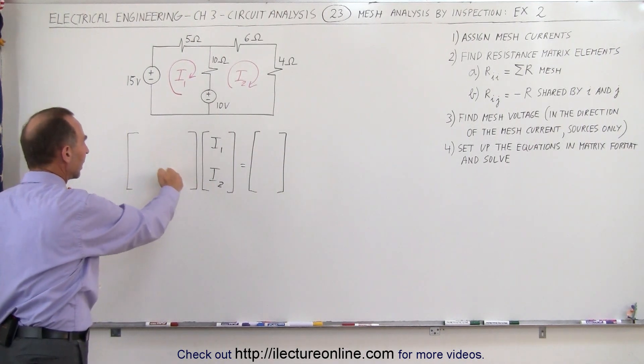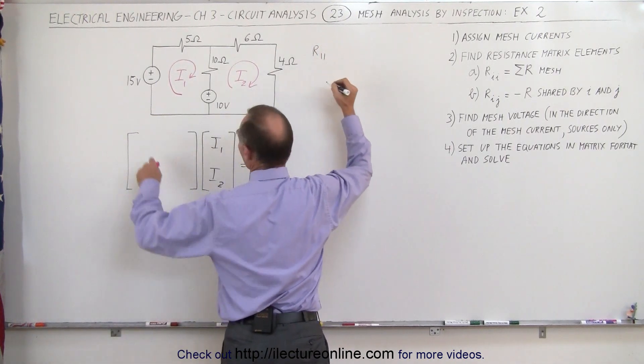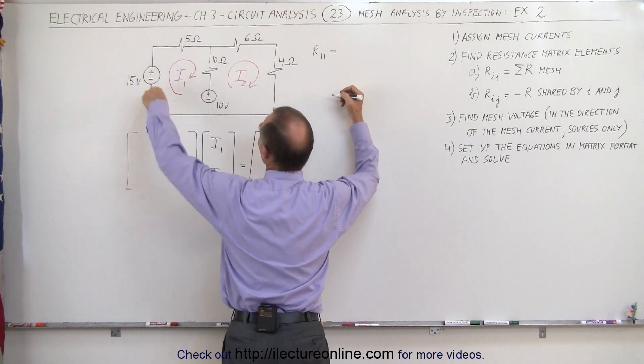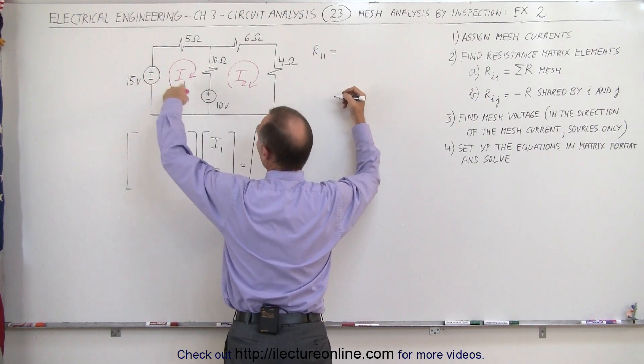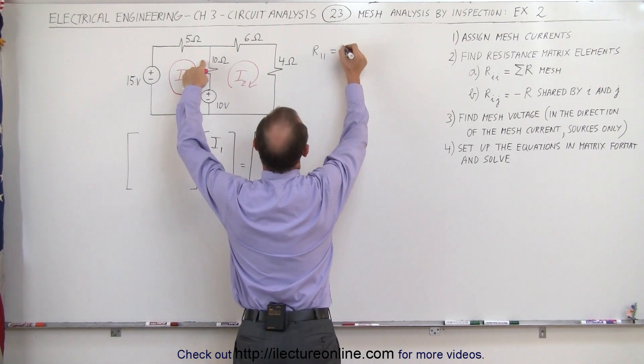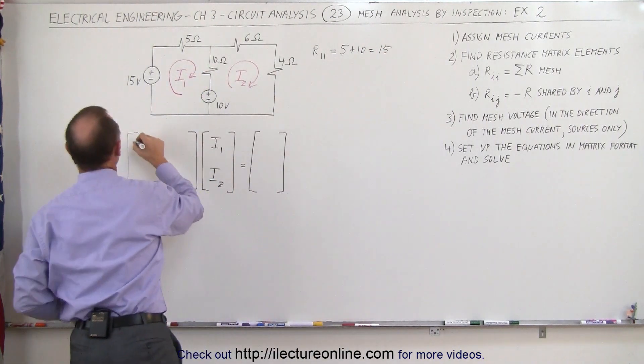We want to find the diagonal elements first, so finding R11, which is the upper left diagonal element, that is equal to the sum of all the resistances as we go around the loop. It doesn't matter what direction you go, you simply add all the resistances together, so it'd be 5 plus 10 in this case, which is 15, and that goes up in the upper left corner.